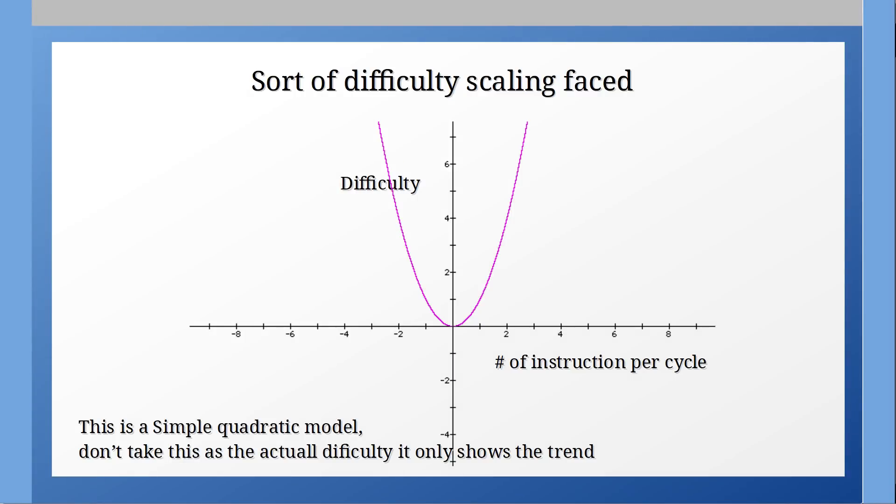Now I'm no mathematician but if there's one thing I know about polynomial equations is that they get pretty steep pretty quickly. This means that decoding a single x86 instruction per cycle is pretty easy. Decoding 2 is alright, 3 is tricky and come Zen and Skylake we're looking at the 6 to 8 instructions per cycle range max. It's incredibly difficult to pull off.